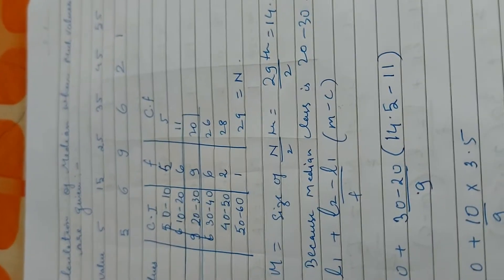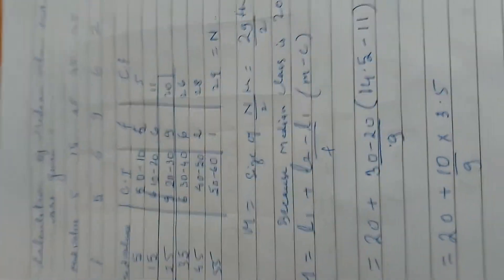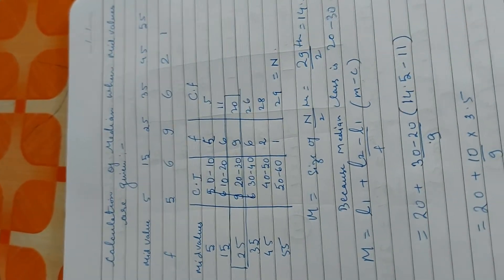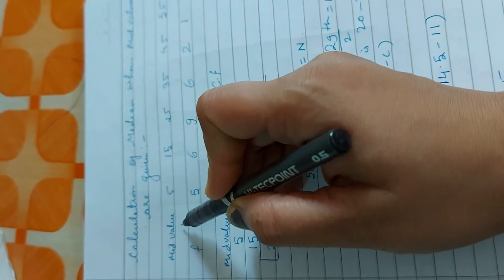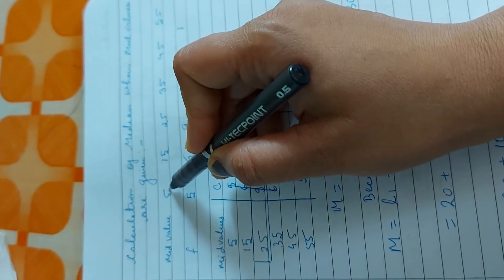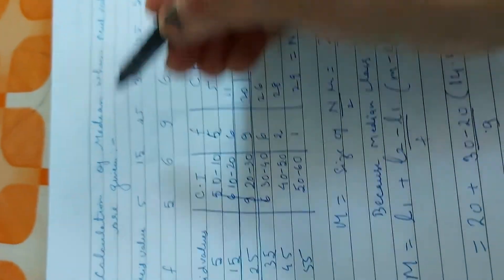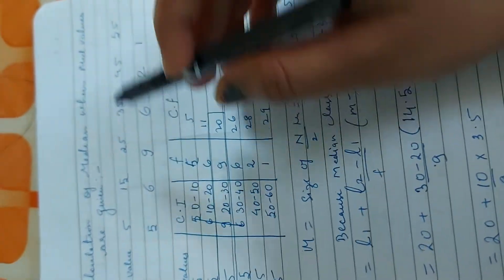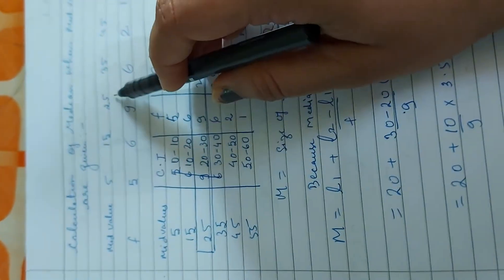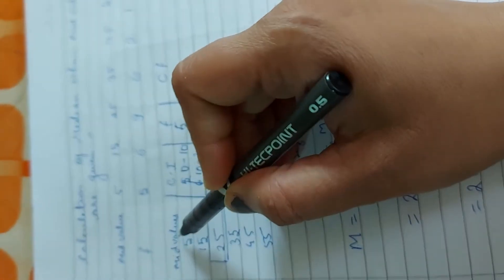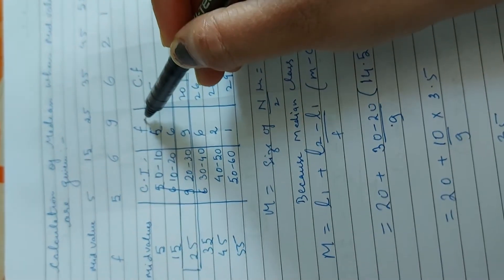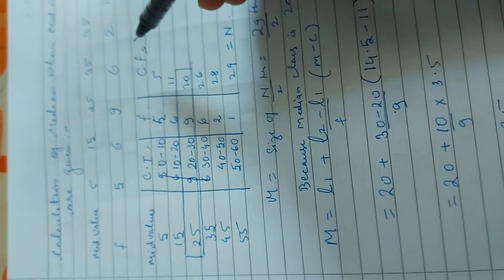Next, next type of calculation is calculation of median. Calculation of median when mid values are given. See, what is the question? Mid value. Here we have no class interval, no less than, no more than. Here we have a question of mid value and frequency. When we ask this question of mid value, we have to start with mid value. What do we have to do with mid value? We have to write mid value and class interval. Then we have to write frequency and cf.